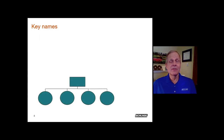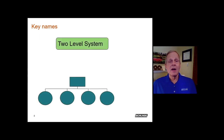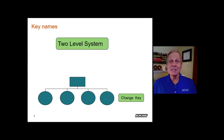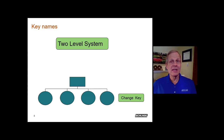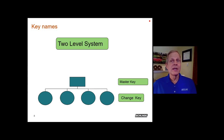When naming the keys for various levels: in a two-level system, the keys at the base are known as change keys — the lowest-level operating key in a master key system, typically operating one door. Nothing is actually changing in the system; these are simply called change keys. Above that would be the master key, which in a two-level system typically operates all the doors in the building.